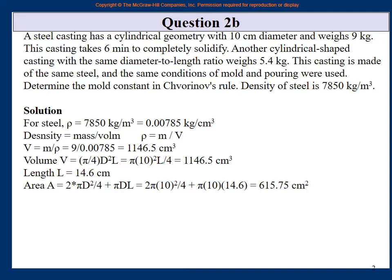The total surface area of a cylinder consists of two circular ends plus the lateral surface. That is: A = 2 × (π/4 × d²) + π × d × l. With d = 10 cm and l = 14.6 cm, we substitute and calculate the total surface area of the original casting.